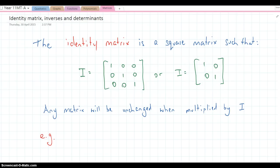We're going to look now at firstly the identity matrix and we're going to lead into the inverse matrix and its determinant, the determinant of a matrix.